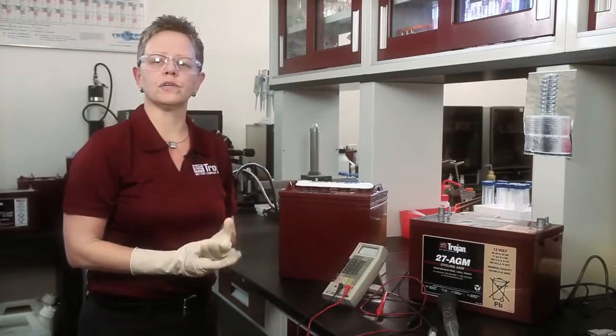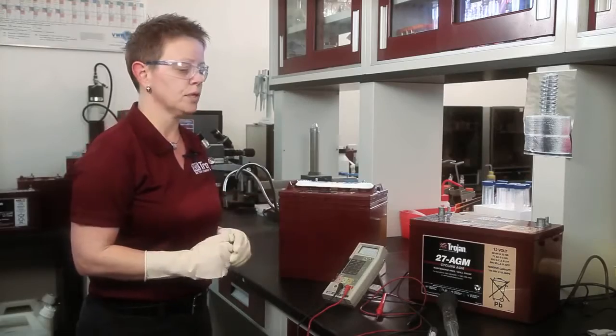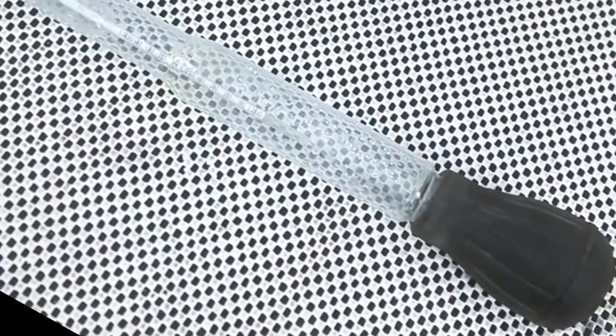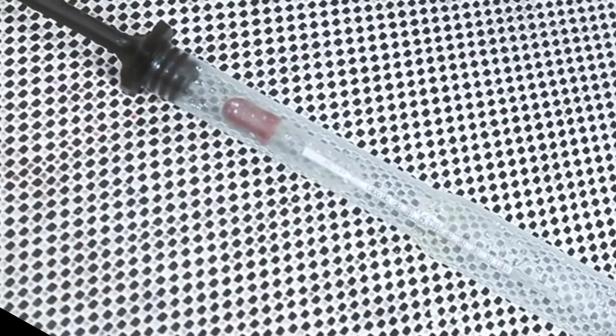The next thing that you do to read the state of charge of a flooded battery would be to read the specific gravity. This is a very inexpensive hydrometer that you can purchase from a local automotive parts store.